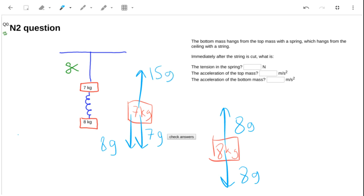What do we do next? We cut the string. How do we calculate the tension in the spring? Well that's still going to be 8g—8 times 9.81, which is 78.5. The acceleration of the top mass—that's going to be the force divided by the mass.